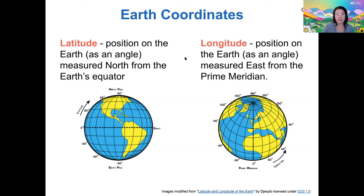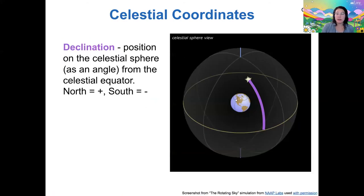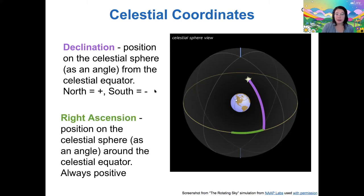The celestial sphere also has similar coordinates to denote position. Instead of latitude, we have declination, which is measured from the celestial equator — positive going north toward the north celestial pole and negative going south toward the south celestial pole. In addition to declination, we have right ascension, which is similar to longitude. It's measured around the celestial equator and it's always positive. Declination and right ascension are the angles you would use to locate an object on the celestial sphere. We'll do some practice with this in the activity today, so if this doesn't make sense yet, it will.